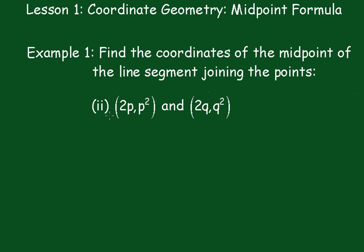OK, now in part 2 we have an algebraic type, and we have to find the midpoint of (2p, p²) and (2q, q²). Not particularly difficult. And that's going to be (2p + 2q)/2 and (p² + q²)/2.